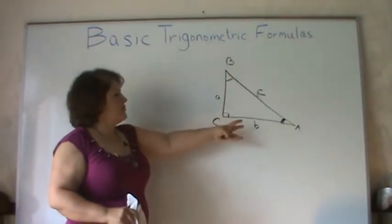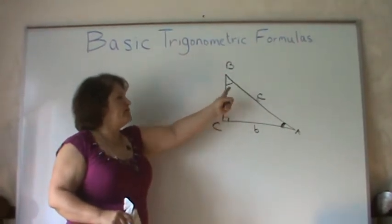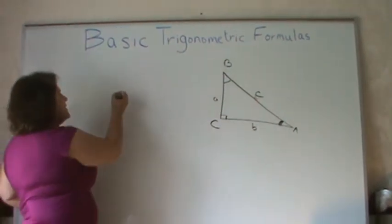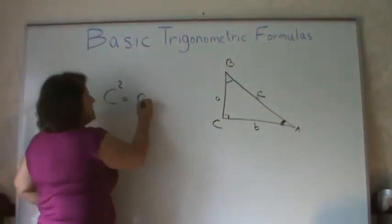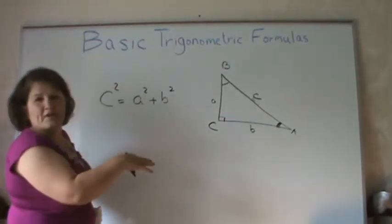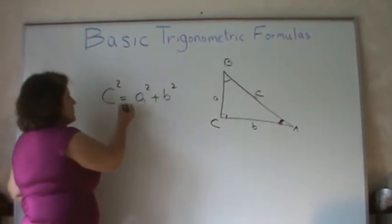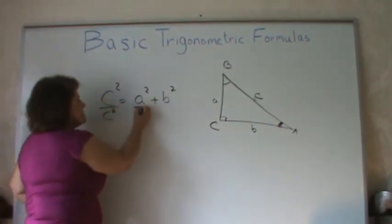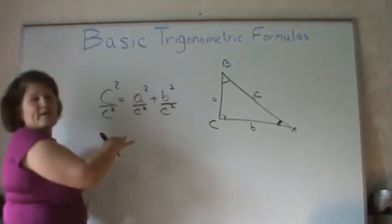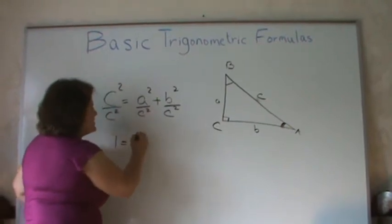If I have a right triangle, you know the basic rule about the relationship between sides of a right triangle is c² = a² + b². Because I'm talking about trigonometric — I know you've known this for a long time — but let's assume I'm going to divide everything by c². I believe if you prove everything, you can understand it a lot better rather than just memorize.